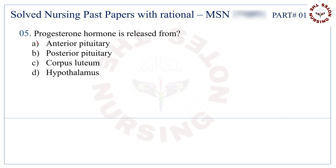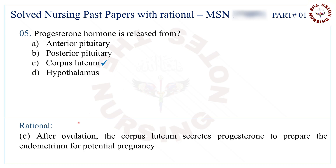Question number 5: Progesterone hormone is released from. The correct answer is C — corpus luteum.